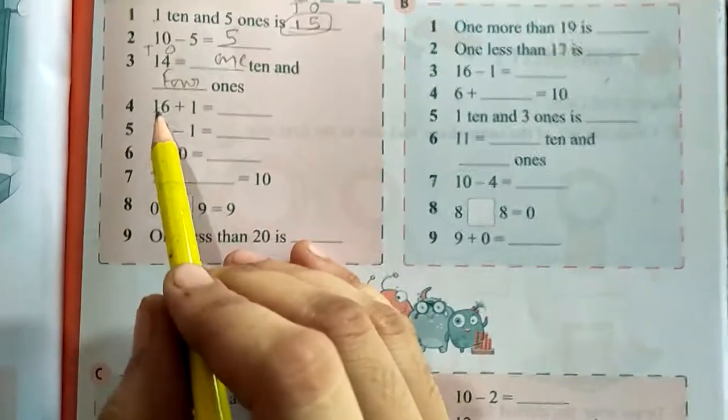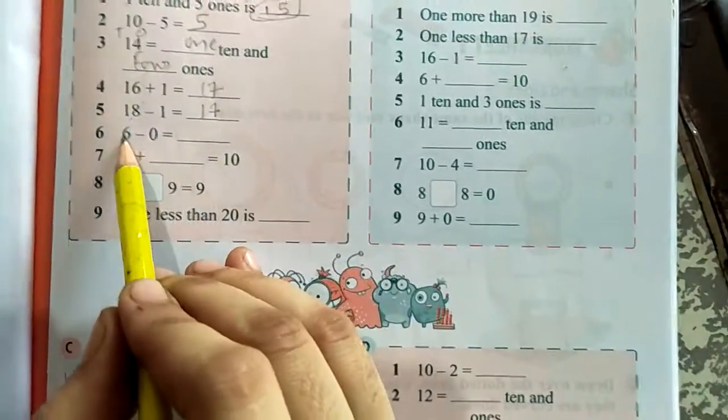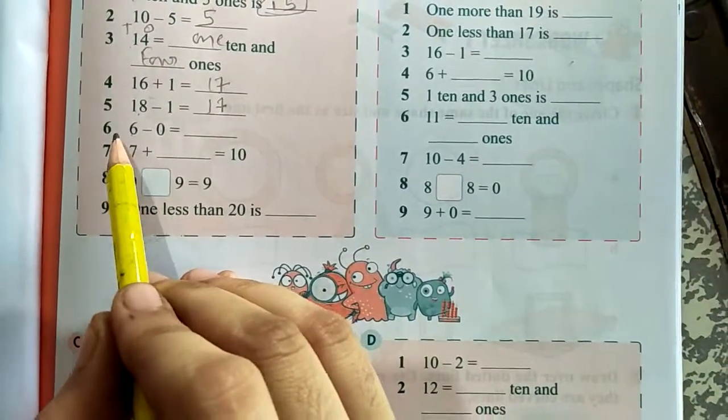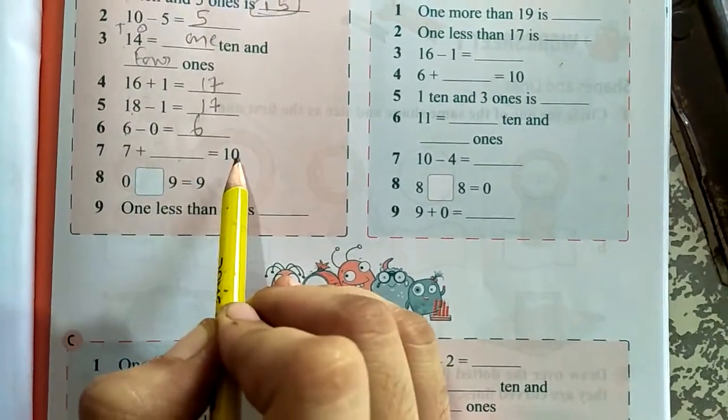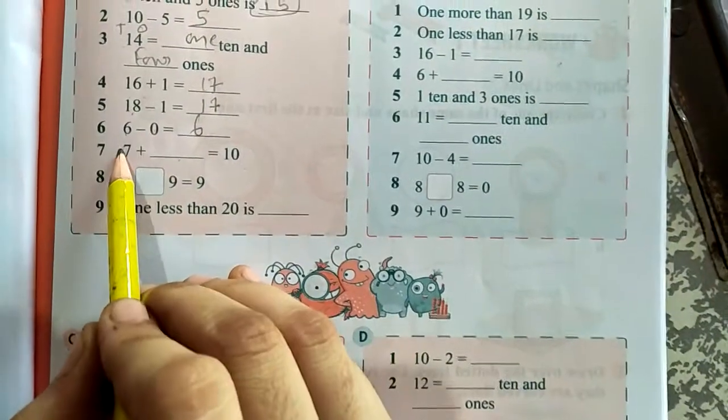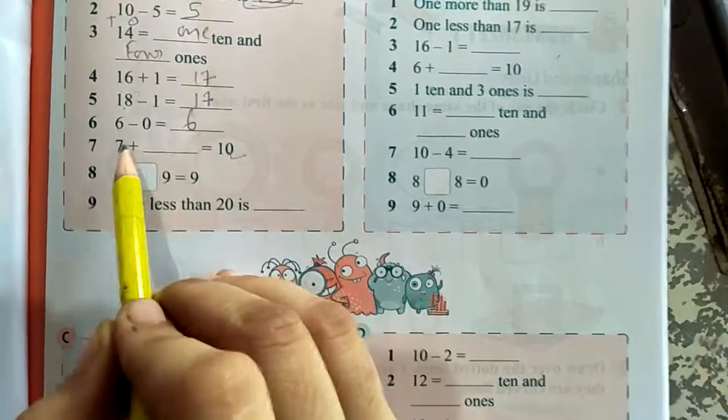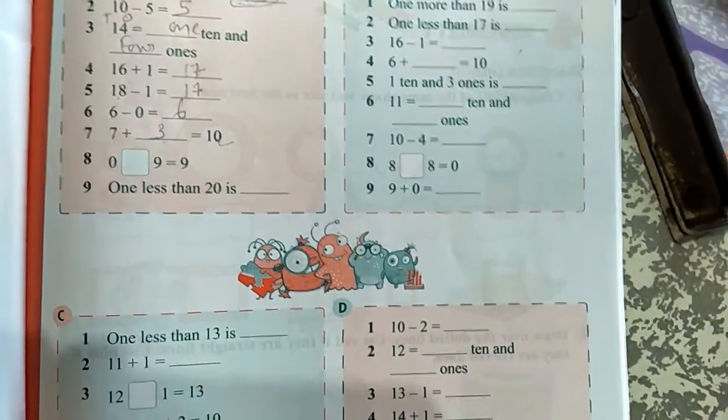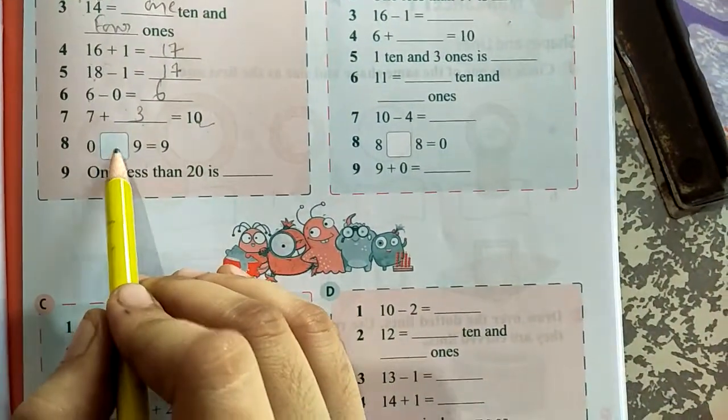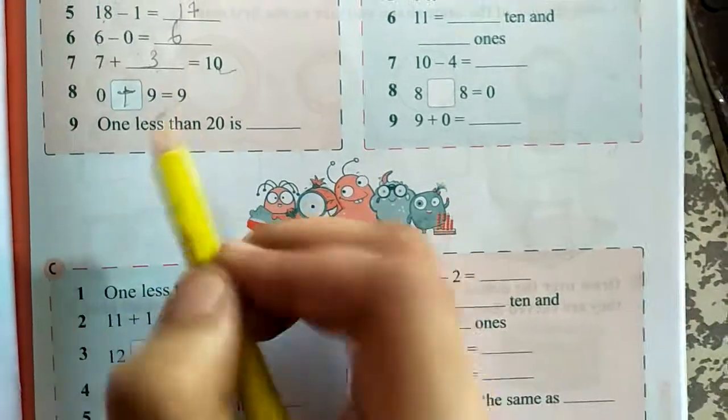16 plus 1, simple: 17. 18 minus 1: 17. 6 minus 0, if you're going to minus 0 from any number, the number will be same: 6. 10 plus dash is equal to... 7 plus dash is equal to 10. So how many numbers you have to add in the 7 number, then your answer gets 10? So 7, 8, 9, 10. When you add 7 plus 3, your answer is 10. 0 dash 9 is equal to 9. What you have to do? You can use plus sign. If 0 plus 9, then your answer is 9.